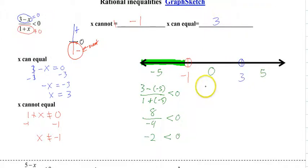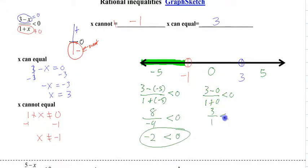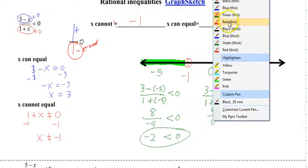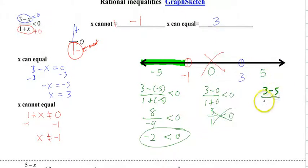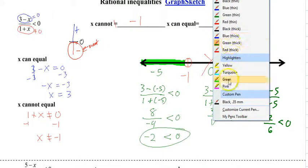Now let's check the middle region. We have 3 minus 0 over 1 plus 0 — is that less than 0? 3 over 1 is not less than 0, so we cross it off. Then we go to the last region and plug in 5, which gives negative 2 over 6, which is negative and less than 0, so we shade that region.